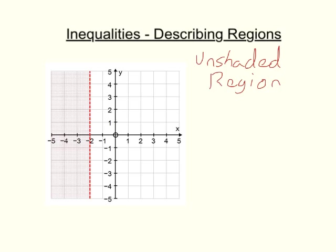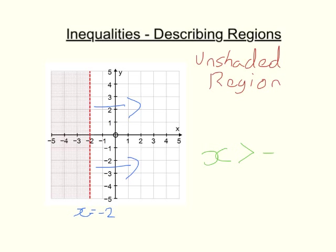The first thing we're going to do is look at the line that marks the boundary of the shaded and unshaded regions, and give that line its equation. That line goes through minus 2 on the x-axis, so that line is x equals minus 2. We want the unshaded region — all the points that are to this side of that line. These values are all bigger than minus 2, so our inequality is x is bigger than minus 2.